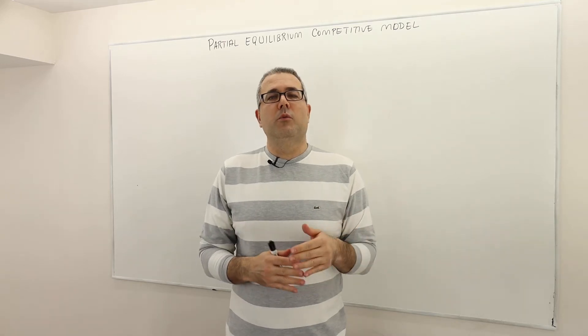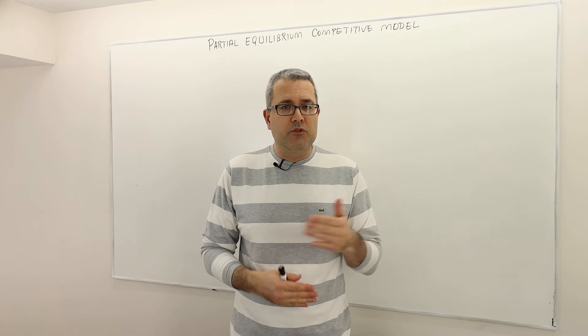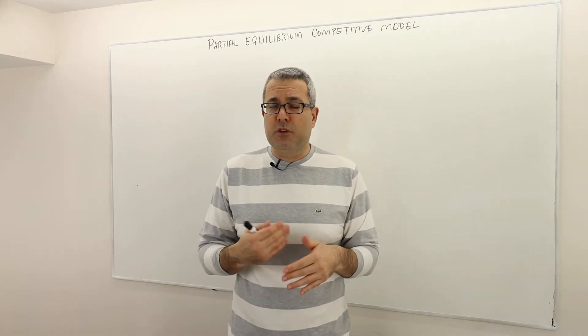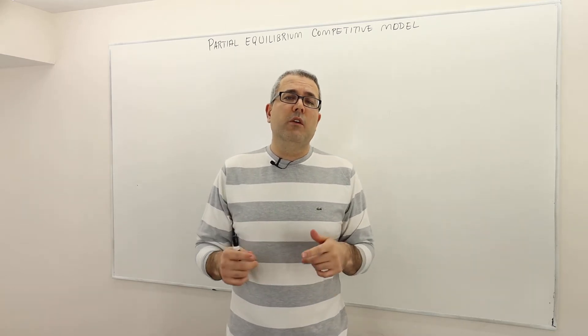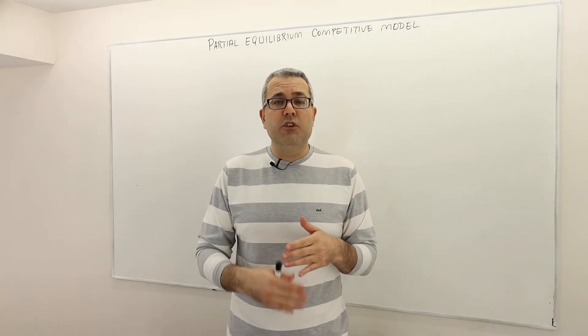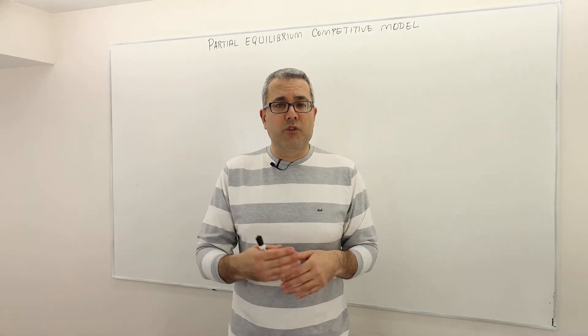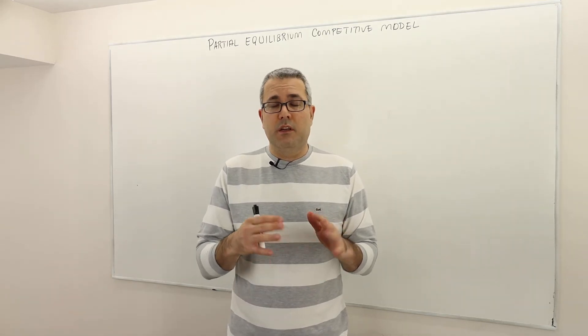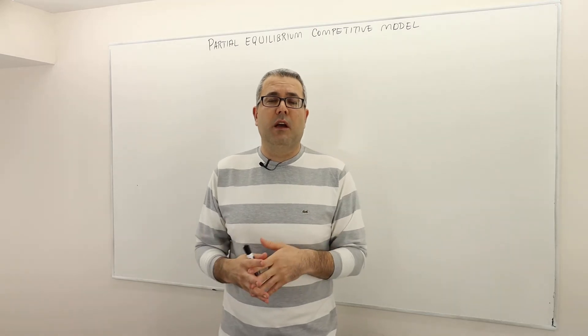Up until this point we talked about consumer theory and learned how we derive the individual demand curves. Now we're going to talk about market demand, and we also talked about individual profit maximizing producers and how we derive their production supply curve. And now we're going to talk about the market supply.